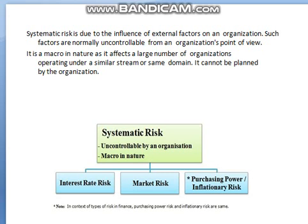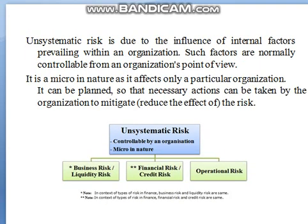Unsystemic risk is due to the influence of internal factors prevailing within an organization. Such factors are normally controllable from an organization's point of view. It is micro in nature as it affects only a particular organization, and it can be planned so that necessary action can be taken by the organization to mitigate the risk.